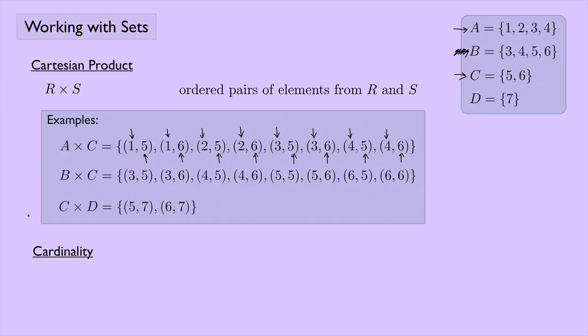Finally, we have cardinality. Cardinality just refers to the number of elements in a set R. If we're talking about the sets A, B, C, and D, we can say the cardinality of A, and sometimes people write it with bars around it, kind of like you would absolute value. The cardinality of A would be four. There's four elements in the set A. The cardinality of B, that's also four. The cardinality of set C, that's two. And finally, the cardinality of set D, that would be one.